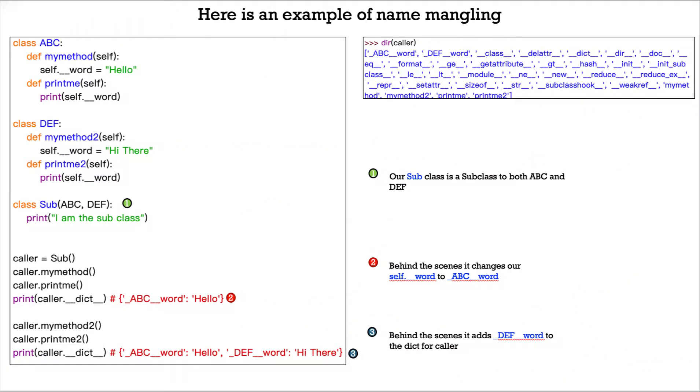Let's look at this example. We have three classes: class ABC, class DEF, and class Sub, which inherits from classes ABC and DEF.